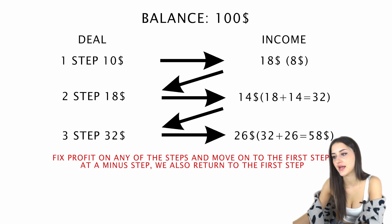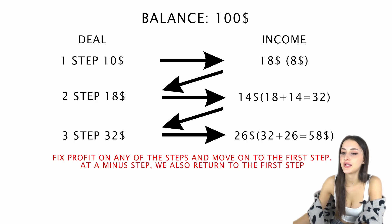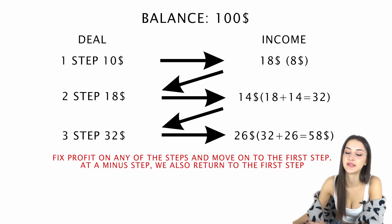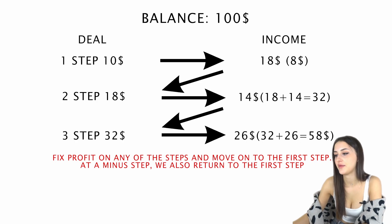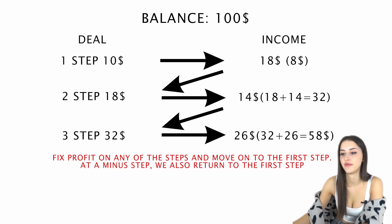So the second step is $18. With a positive outcome, the net profit will be $14. Adding the net profit of the second step, the third step is $32. The net profit in the third step with a positive outcome is $62. Adding the profit of the second and the third step, the total profit is $58.